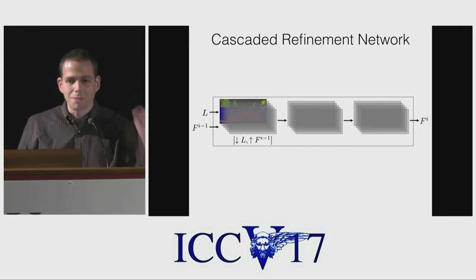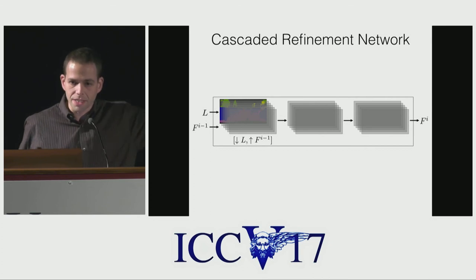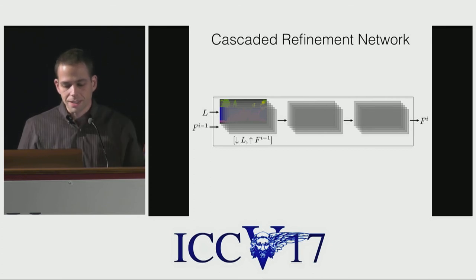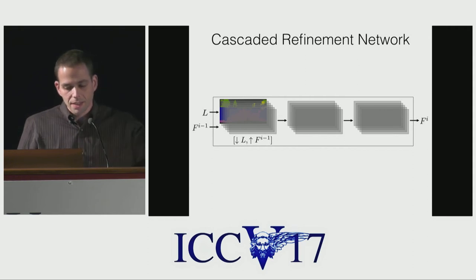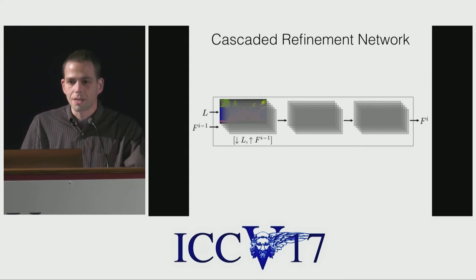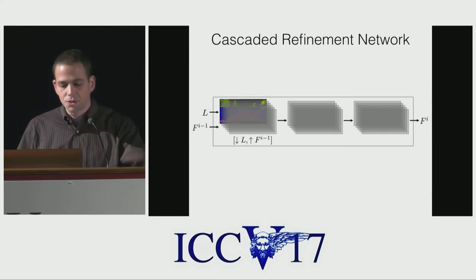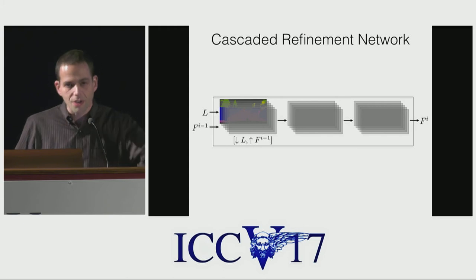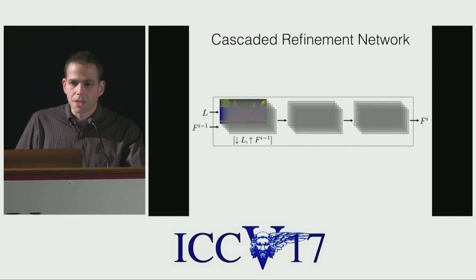These upsampled 8 by 16 feature maps are fed into the module at the next octave — the next resolution, 8 by 16 — along with the downsampled label map at 8 by 16. Taken through convolutional layers at that resolution, out comes 8 by 16 feature maps, upsampled to 16 by 32, fed into the module at the next resolution along with the label map downsampled to 16 by 32, and so on. We go up exponentially in resolution until we hit the desired resolution.